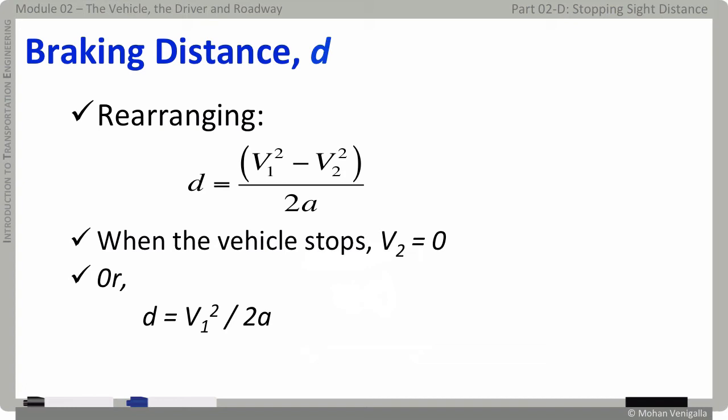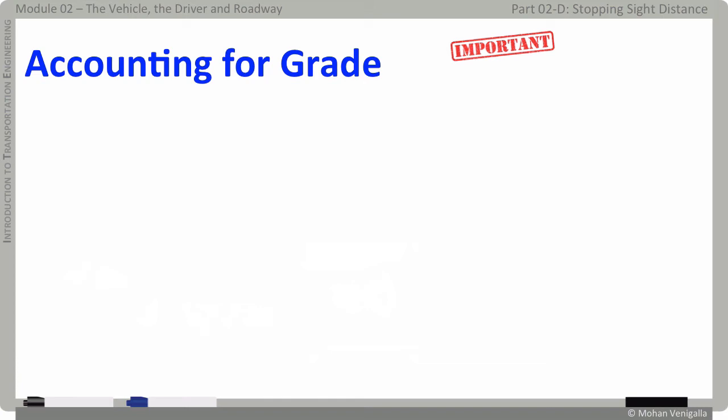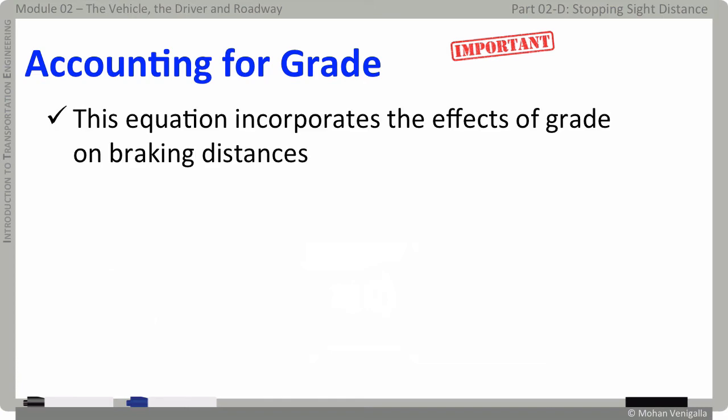And wait a minute, what if the vehicle is negotiating a grade up or down? How are we going to account for that? AASHTO simplified the equation for incorporating the effects of grade on braking distance and that equation is shown here.